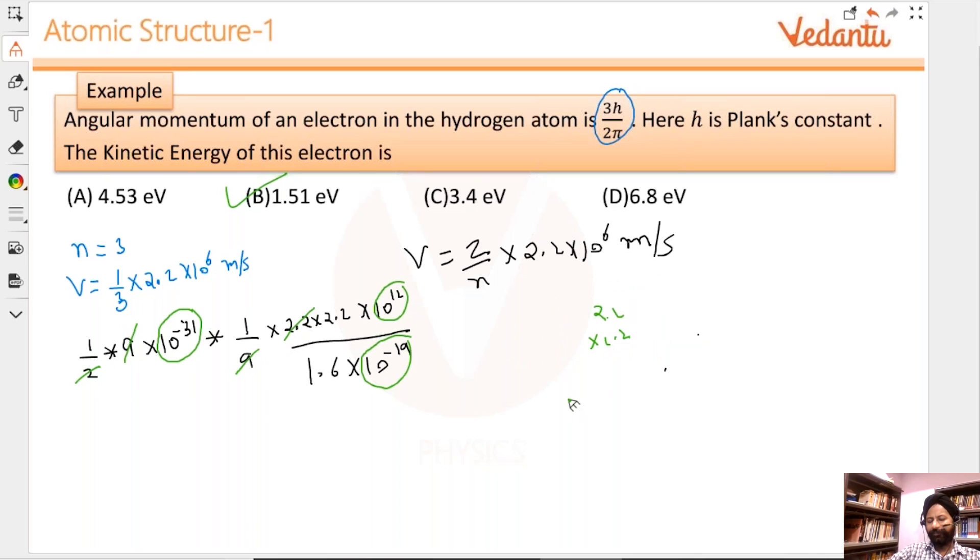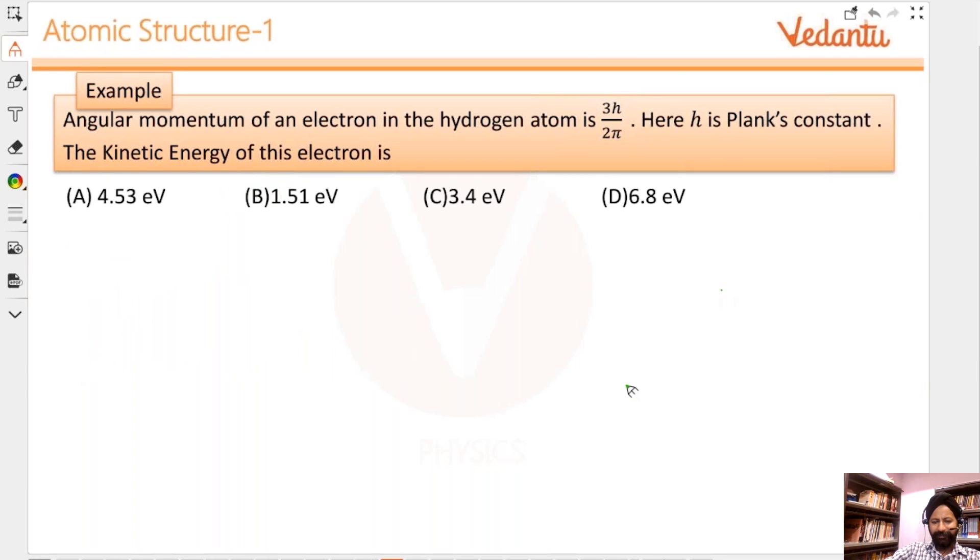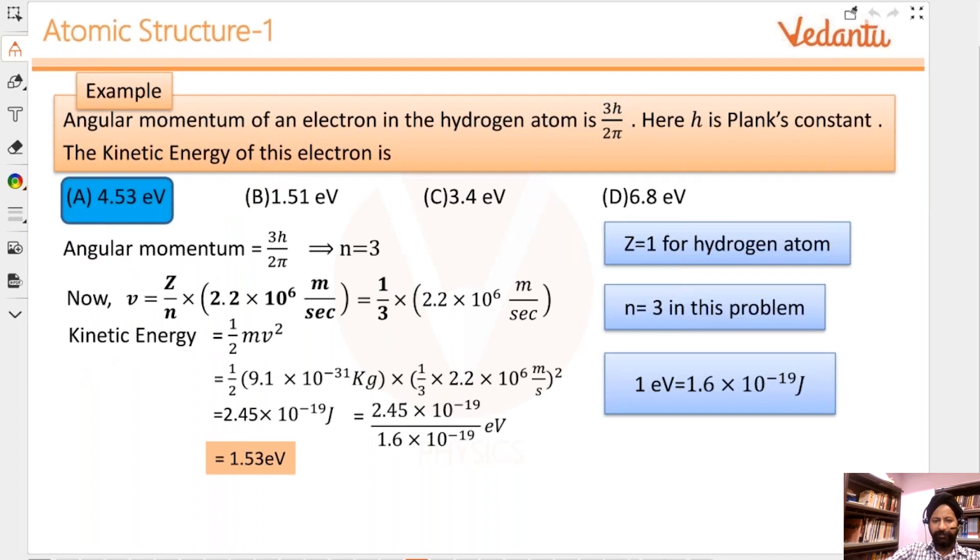You have to do smart calculations like that. Don't start dividing 2.2 times 2.2 and then divide all that by 1.6 - that's a waste of your time. You have to do estimates. This is not just for exams - in real life when you start working, you have to do quick and intelligent guesses. You need estimations, not exact values. The answer is 1.51, which was quick and dirty, right? Very quick calculations, no details.